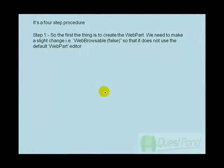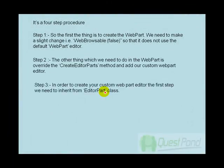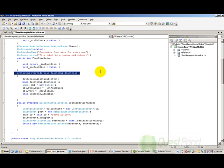After step one, there are two more important steps. The first is that the webpart should specify which editor it is going to use, so that the SharePoint environment can attach that editor to the webpart. The third step is that we need to create our own custom webpart editor. So let's first do step two. In order to specify the editor, we need to override the CreateEditorParts method.